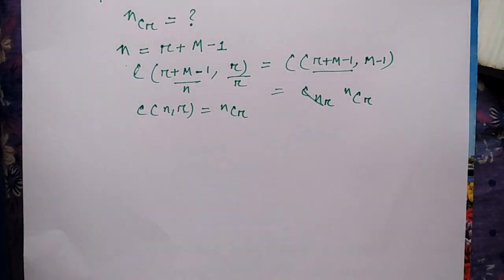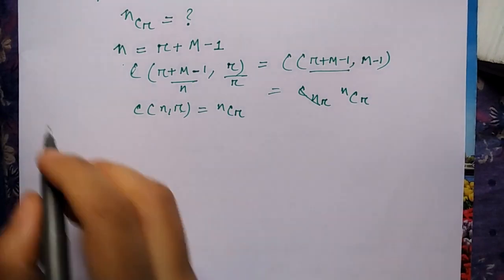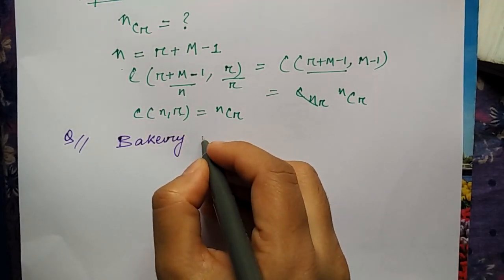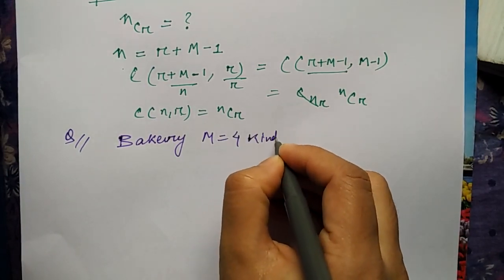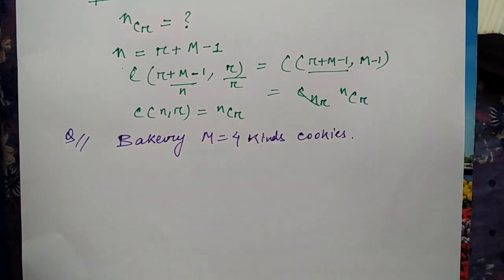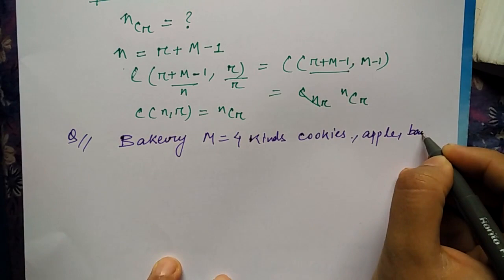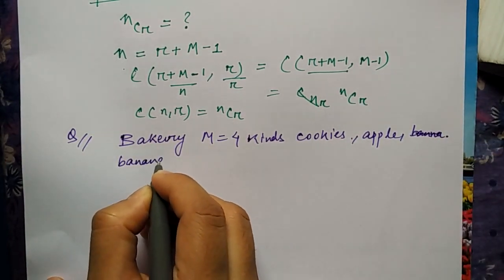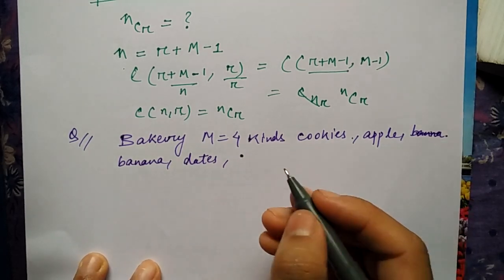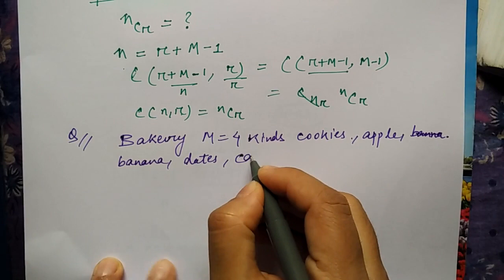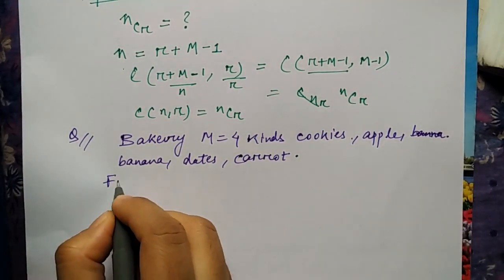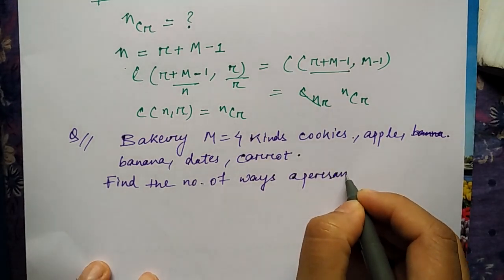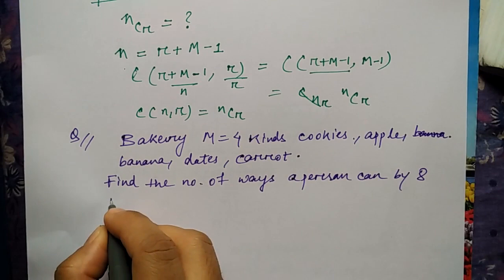Let me tell you how it is happening. So the question is: in a bakery, m equals four kinds of cookies - apple, banana, dates, and carrot. Find the number of ways a person can buy eight cookies.